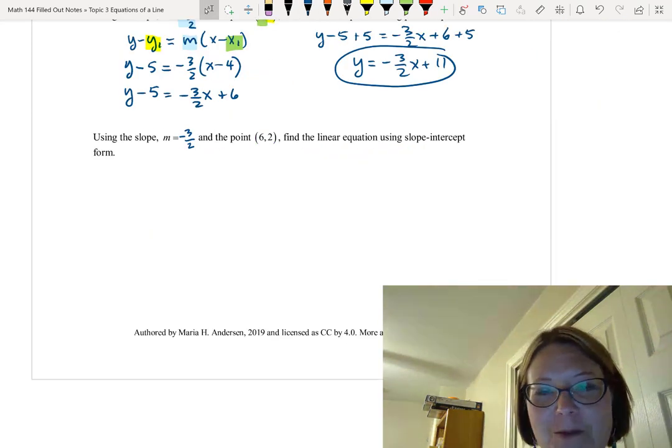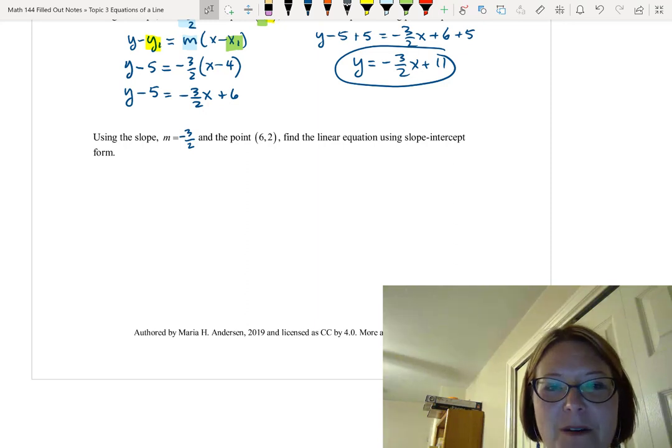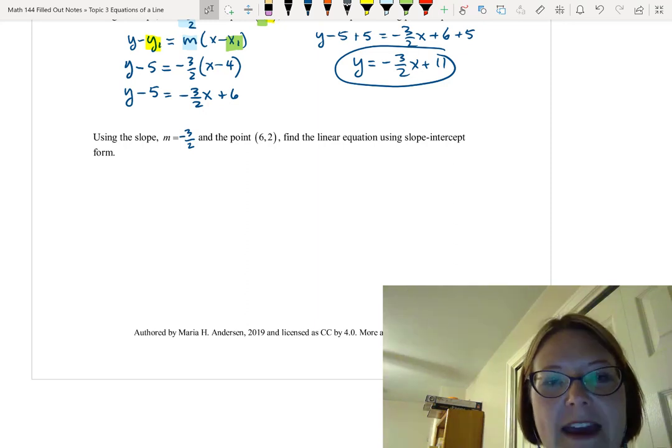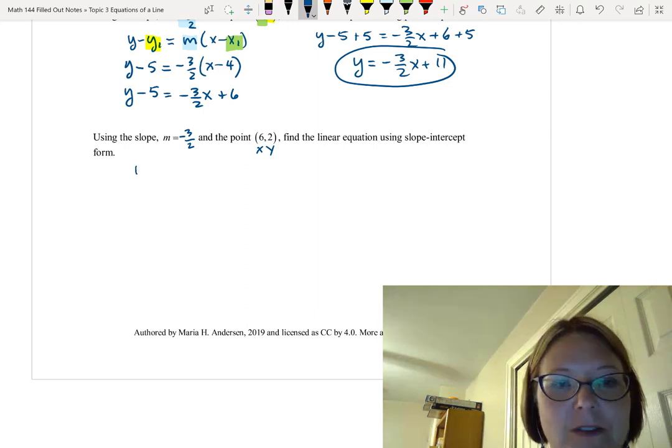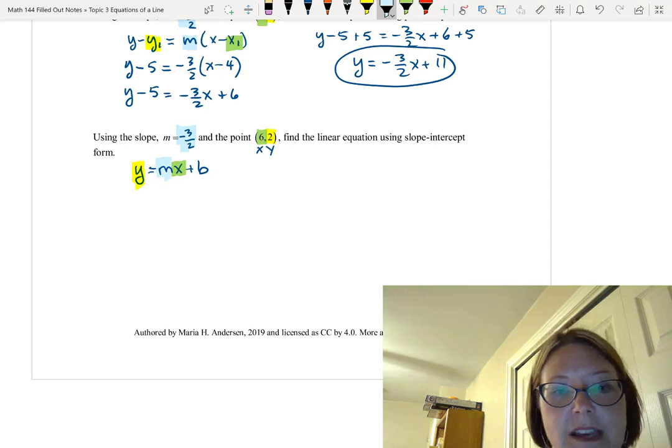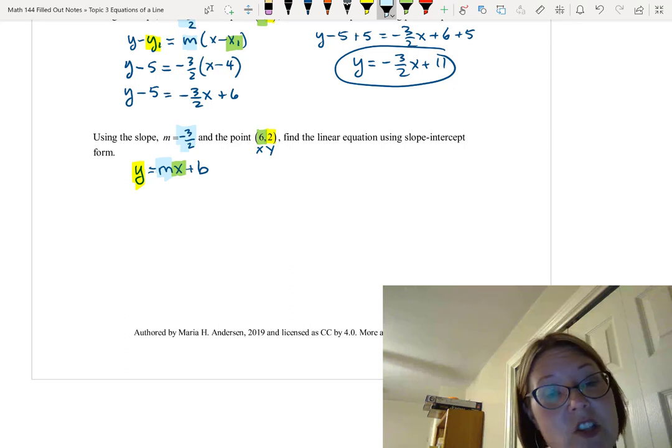In this final example, we're going to use the slope-intercept form to find the equation of the line. Now we have the slope and we have an x and y value here. What we don't have is a b value. So normally we use this equation y equals mx plus b. In this case, we have a y of 2, we have an x of 6, we have a slope of negative 3 halves, and that would leave us with a b that's sitting there by itself. We can solve for b and then use it to rewrite the equation.